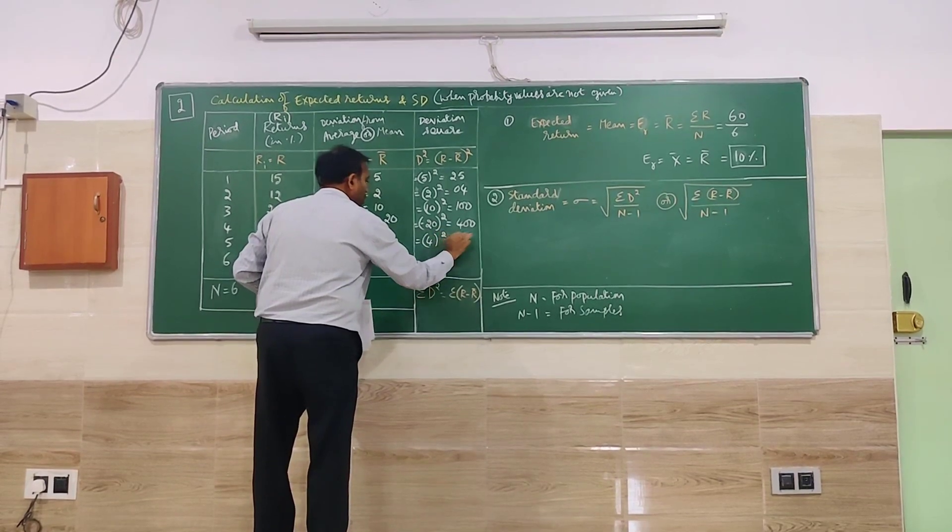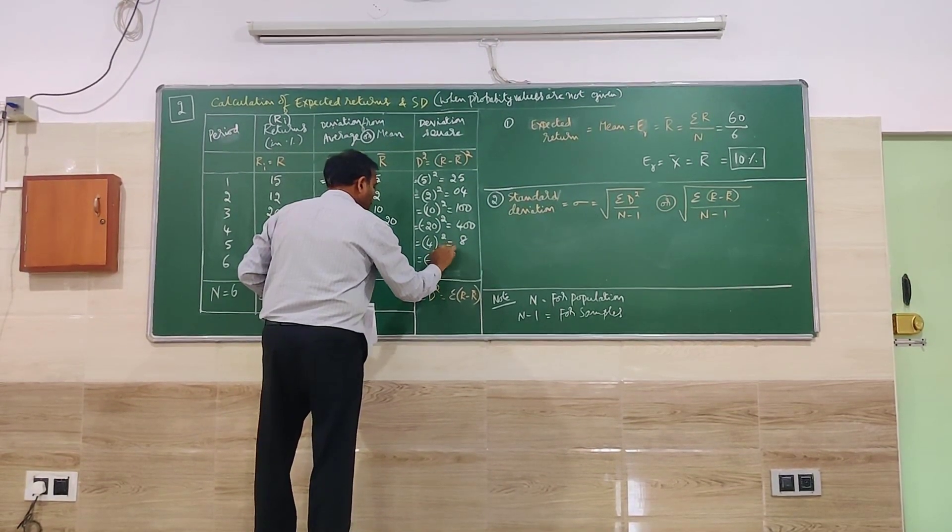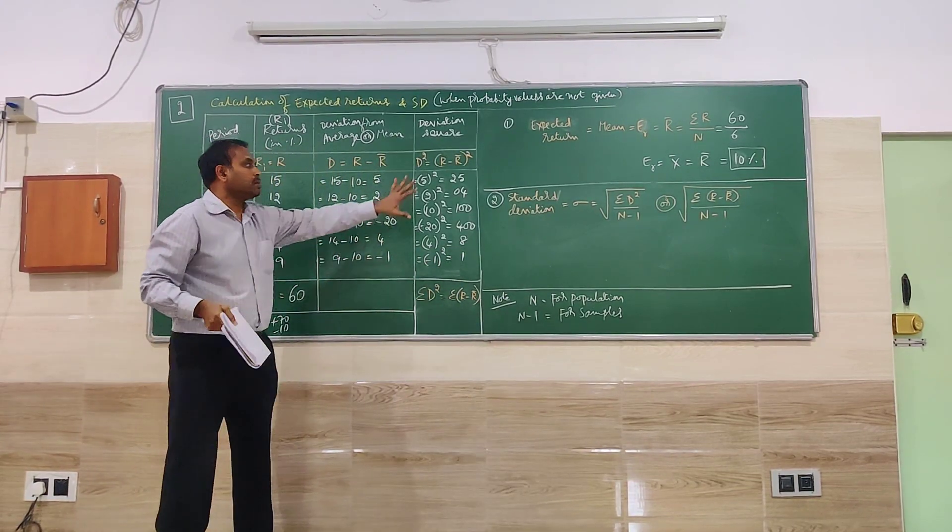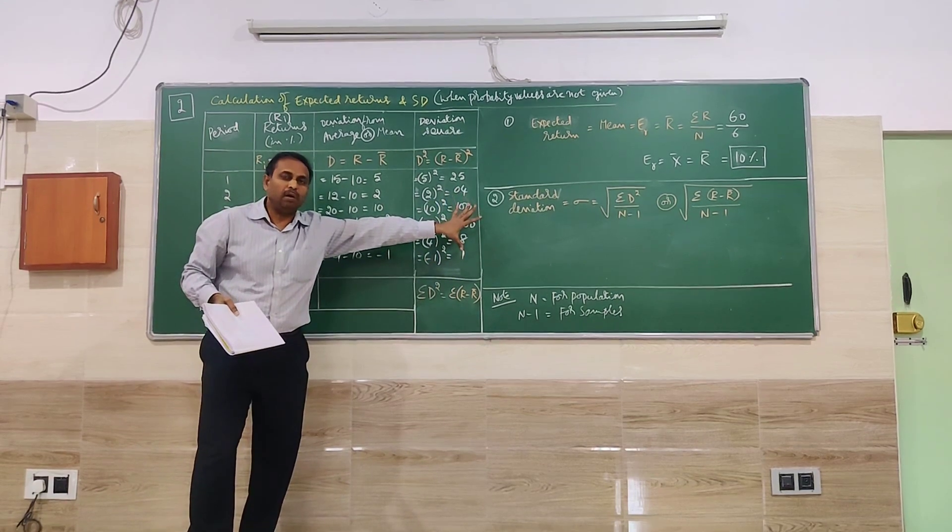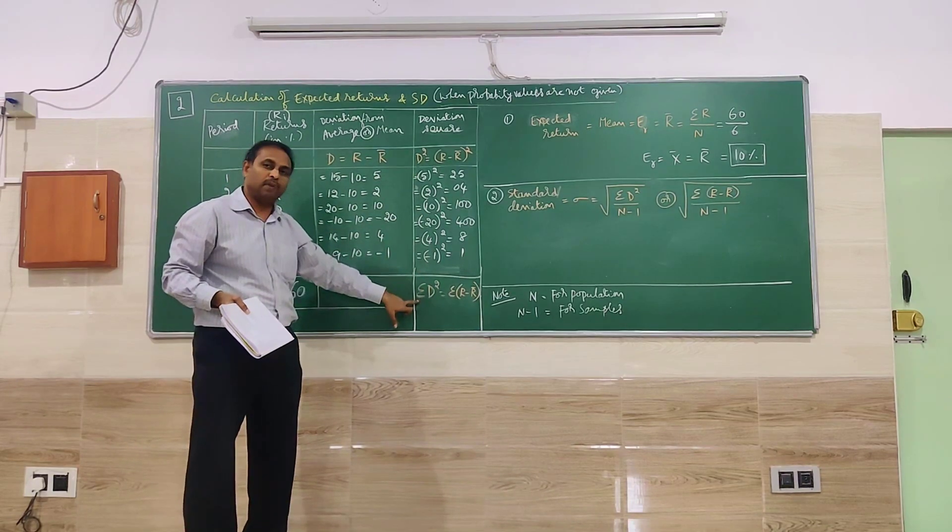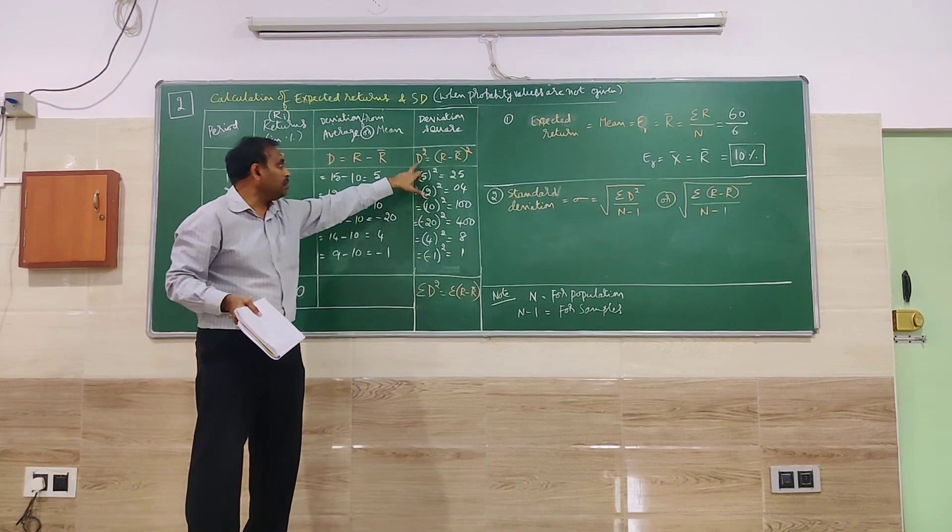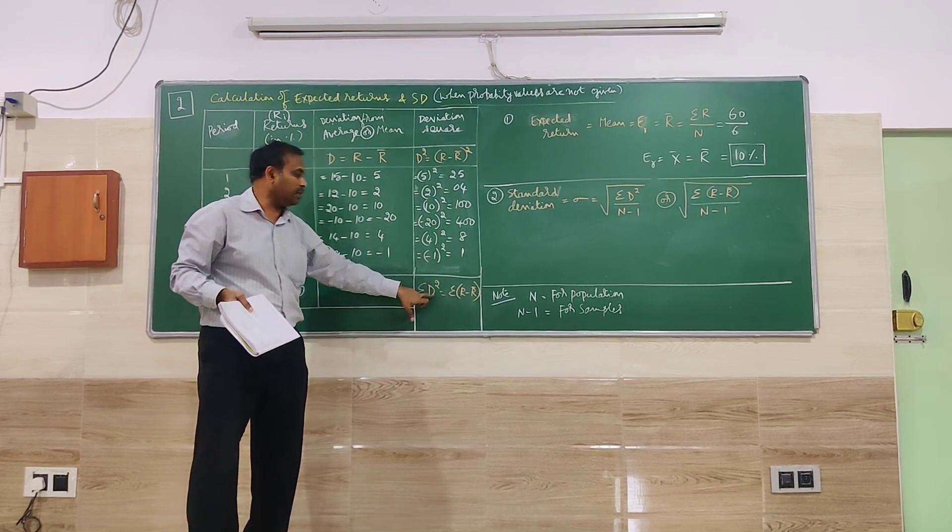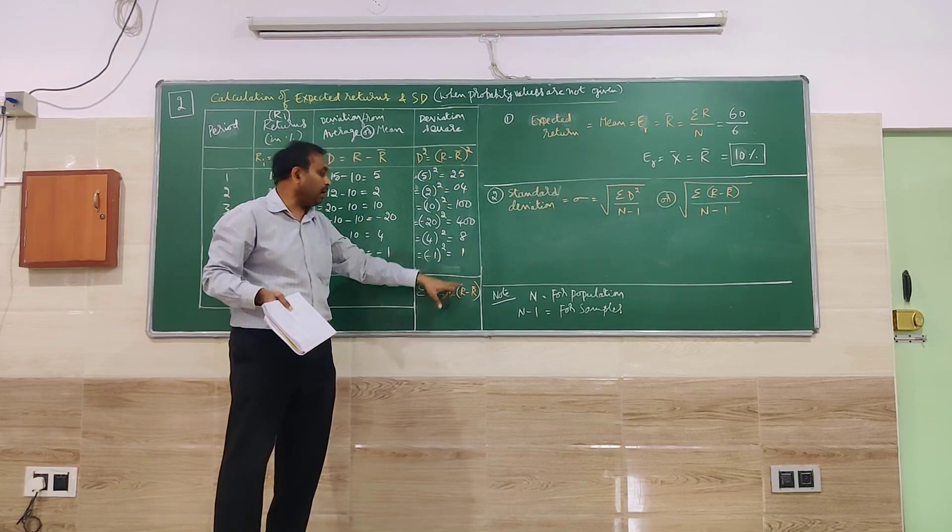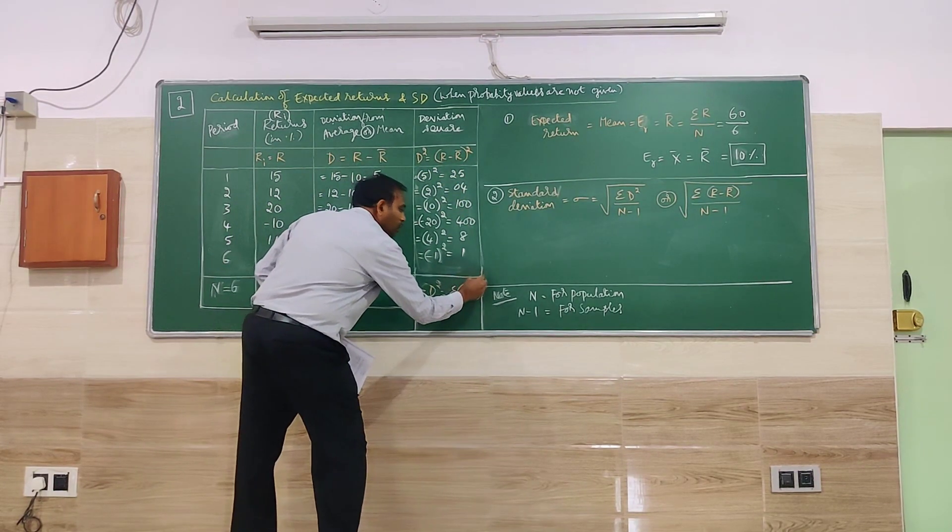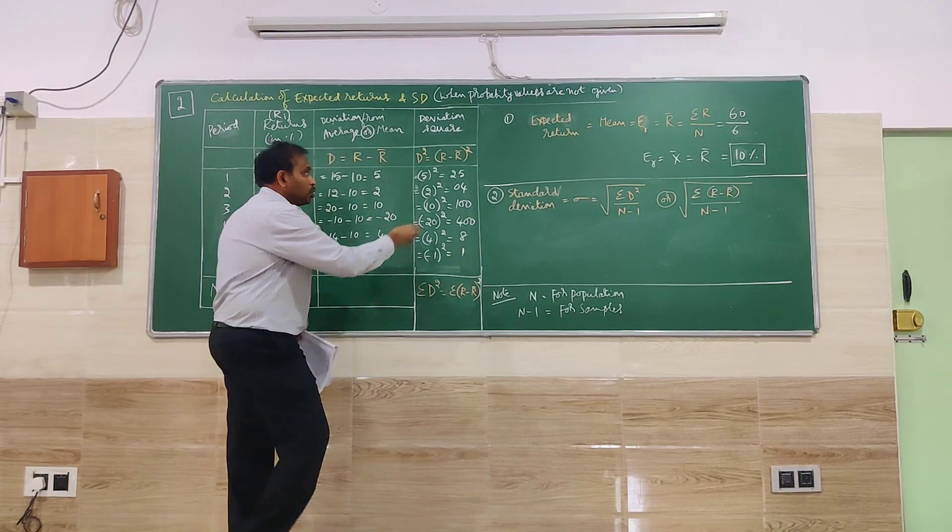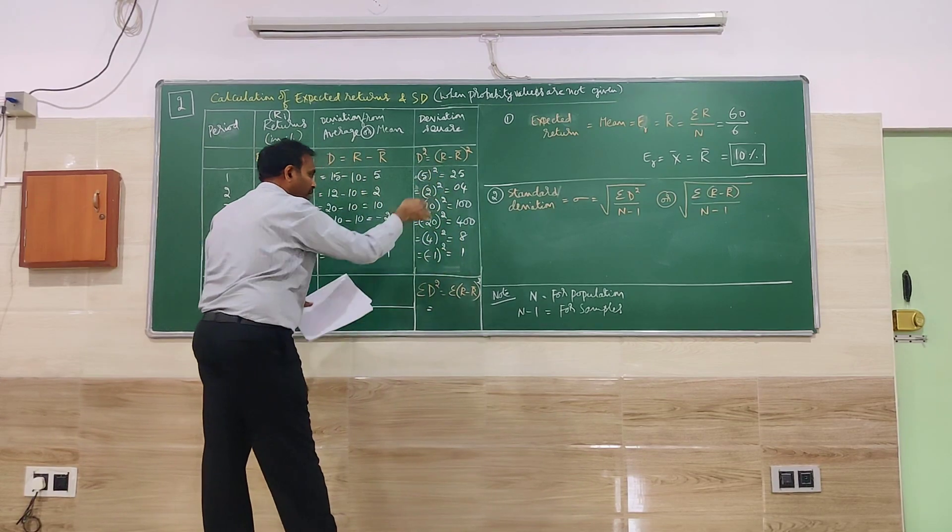Minus 20 square. Minus 20 square is minus 20 into minus 20, that becomes plus 400. 4 square, that is 16. Minus 1 square, so minus 1 into minus 1 becomes plus 1. So we have to total this to go for calculation of standard deviation. So here I have given two different formulas. You can observe here. One is for D square.